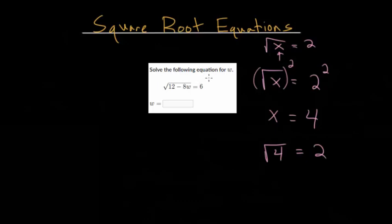Let's use this idea to solve these square root equations. We have the square root of 12 minus 8w equals 6. For this one, it's already solved for the square root term.